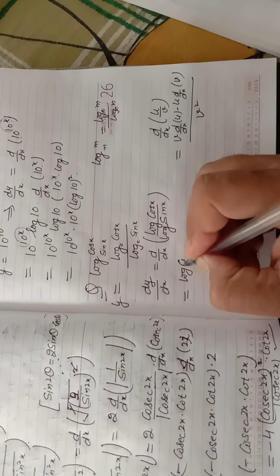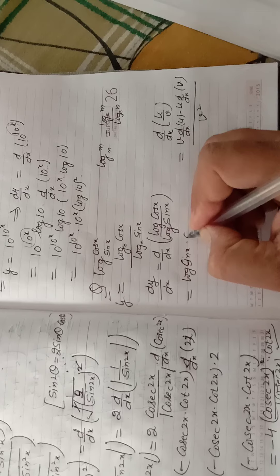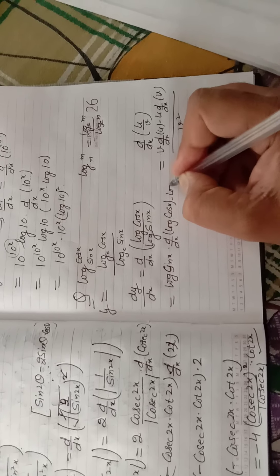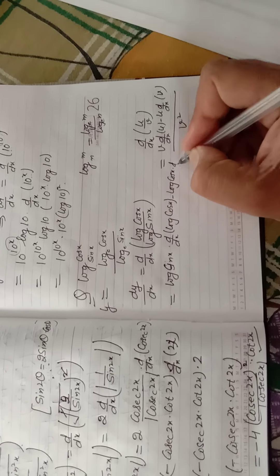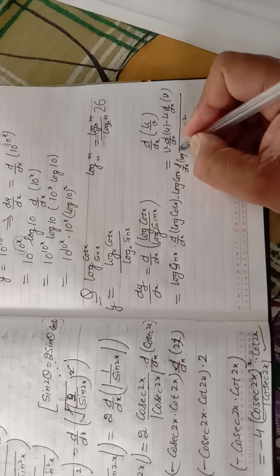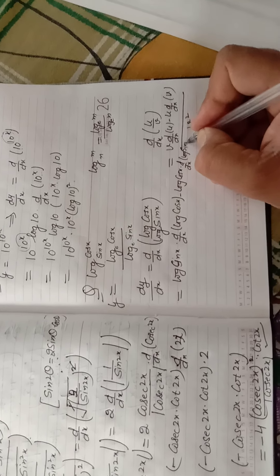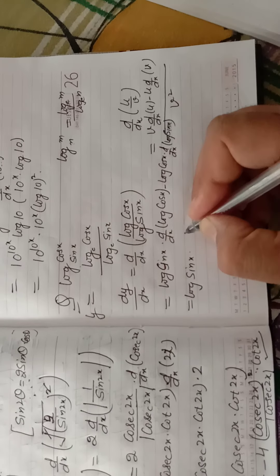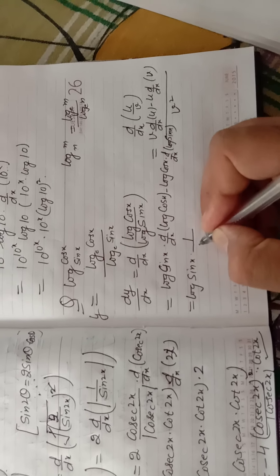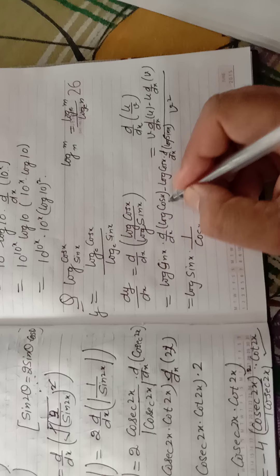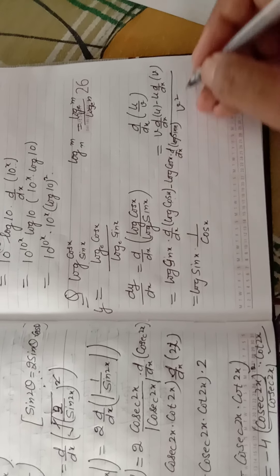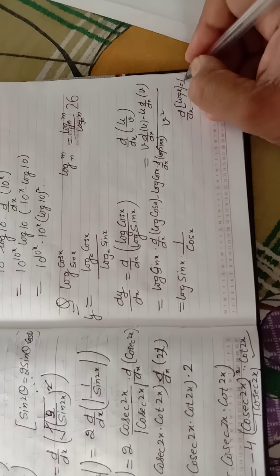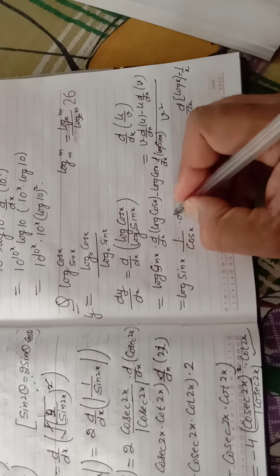Applying the quotient rule: log(sin x) times d/dx of log(cos x), minus log(cos x) times d/dx of log(sin x). Using d/dx(log x) = 1/x, the derivative of log(cos x) is 1 over cos x times the derivative of cos x.